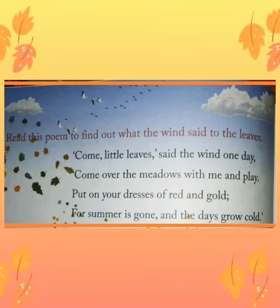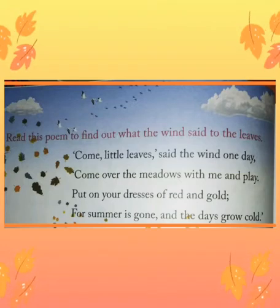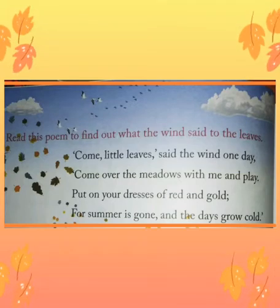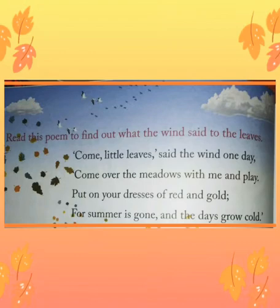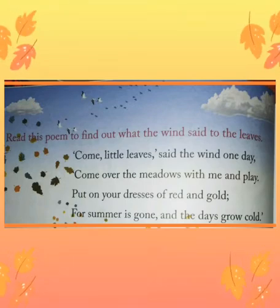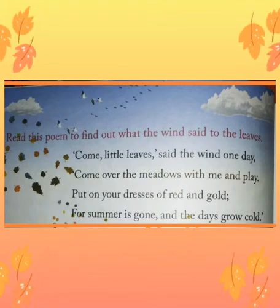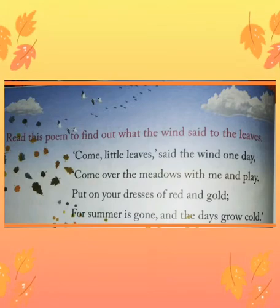That is, the leaves change from green to red, orange, yellow or brown before falling. Have you noticed it children? So who is calling the leaves? The wind is calling the leaves. And what color are the leaves? The leaves are red and golden color now because it is autumn season.